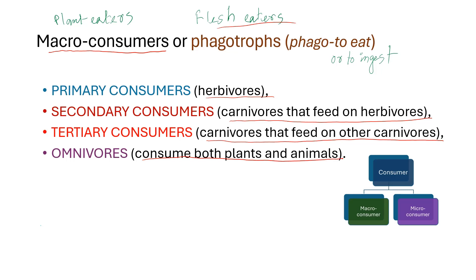Herbivores may be insects, zooplankton, or animals like deer, cattle, elephants, etc. Carnivores consume flesh and usually prey on herbivores and other carnivores — animals like tigers, lions, etc. They can be classified as carnivore order 1, carnivore order 2, and so on based on their feeding habits.